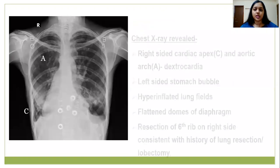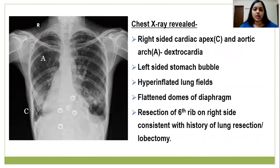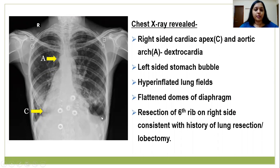The chest X-ray findings revealed a right-sided cardiac apex and a right-sided aortic arch, indicative of dextrocardia, a left-sided stomach bubble, hyperinflated lung fields, flattened domes of diaphragm, and resection of a sixth rib on the right side consistent with history of lobectomy.